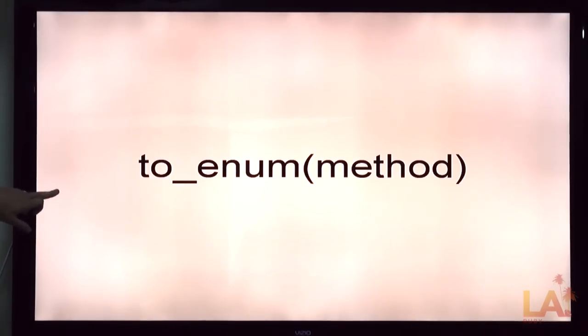So you've got an enumerator. The other way you can get them is to call to enum on anything that descends from object, which is anything. Object is sort of the root class in Ruby. Well, basic object is now, but object is its only descendant, and then everything else.